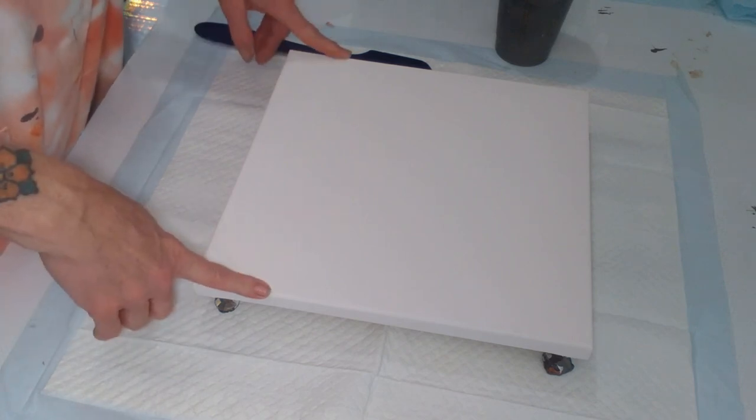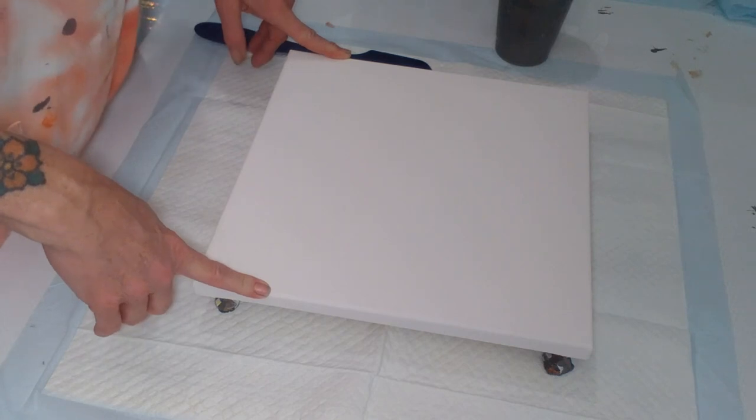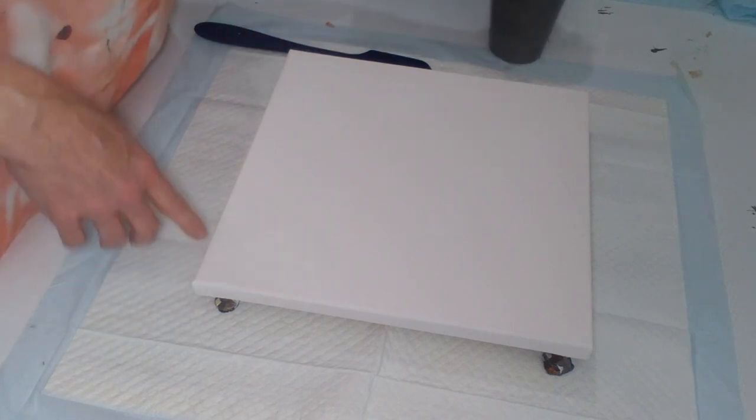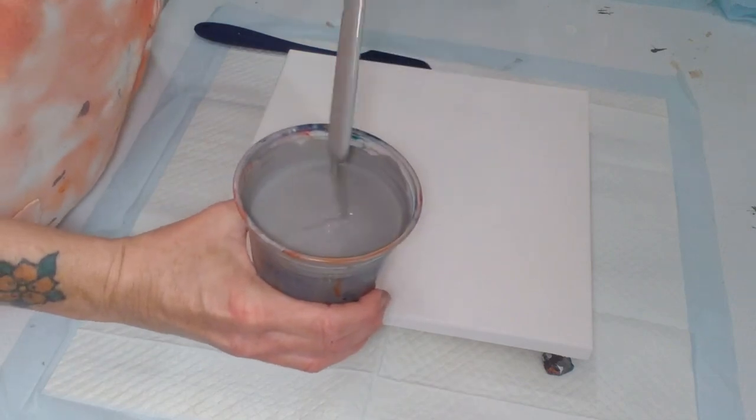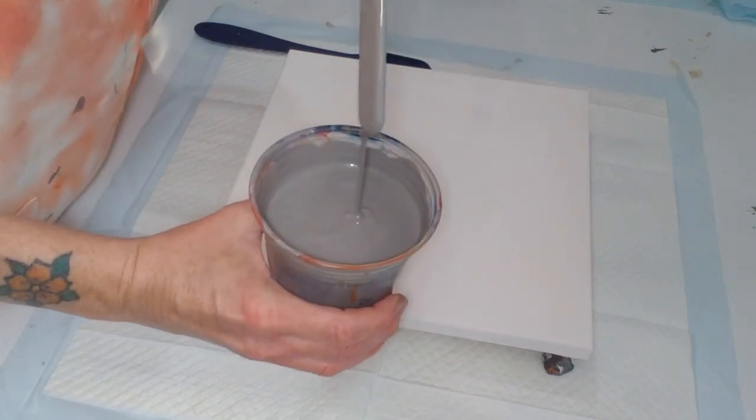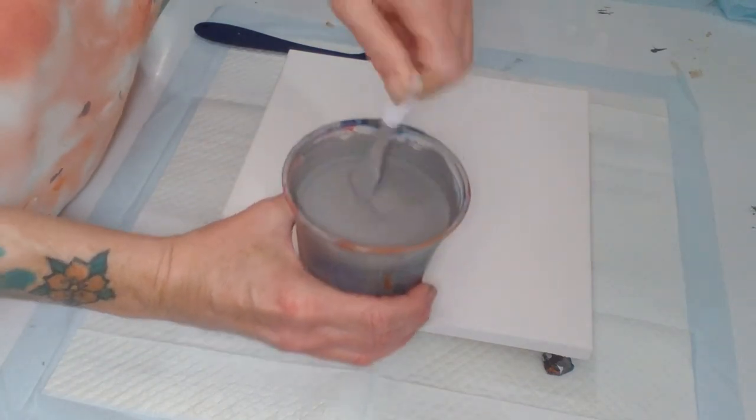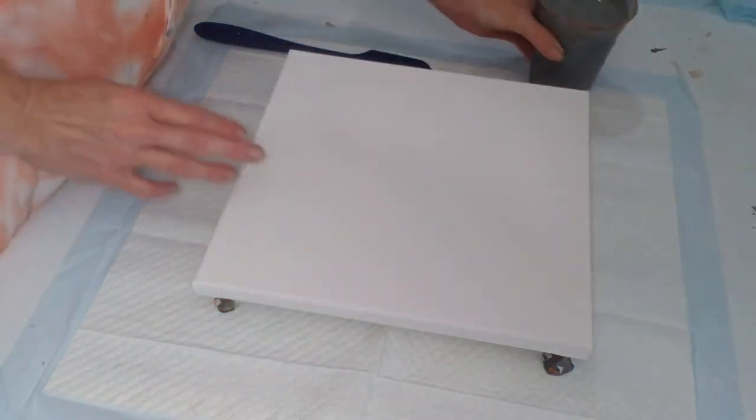Today we're going to do a pour on this 12 by 12 canvas. I'm going to do a swipe. The base coat is just a bunch of my drippings mixed together and it made this wonderful gray color. So that's what we're going to use for a base coat.